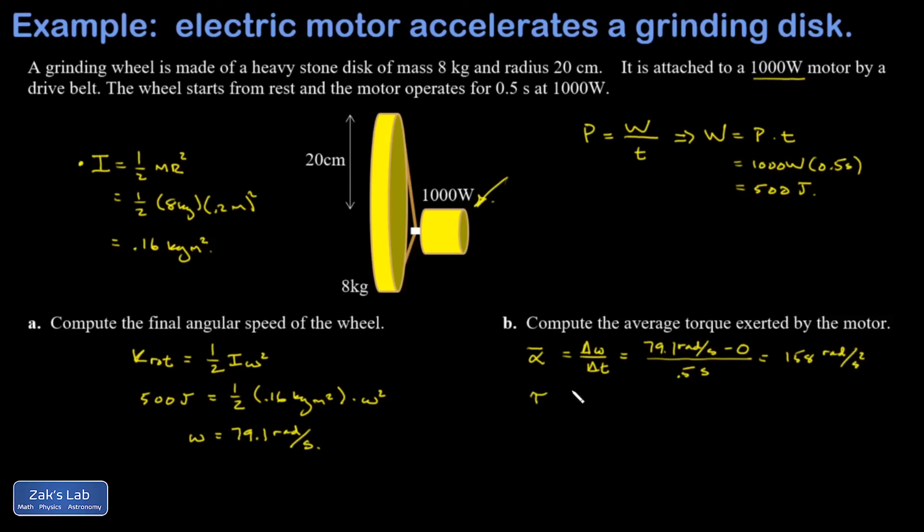Then I go to the rotational version of Newton's second law, tau equals I alpha. Again, we look at torque as twisting force. Moment of inertia is the resistance to angular acceleration. In other words, how hard is it to twist something? And then alpha is the rate of change in our angular velocity. So I'm trying to get the average torque, so I'll just plug in the average angular acceleration. I is 0.16, alpha bar is 158, and I get 25.3 Newton meters of torque exerted by the motor.